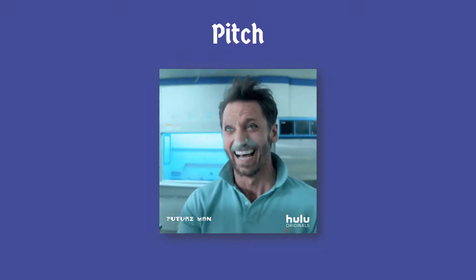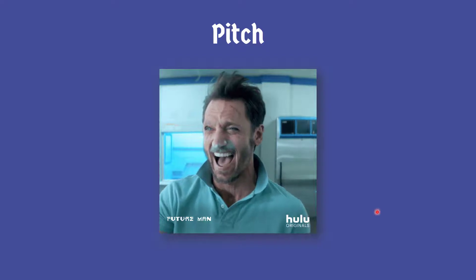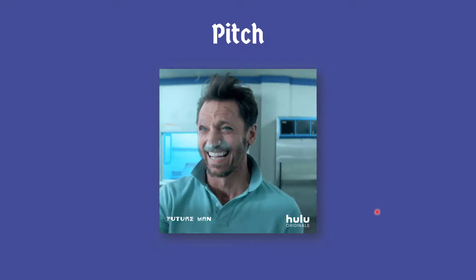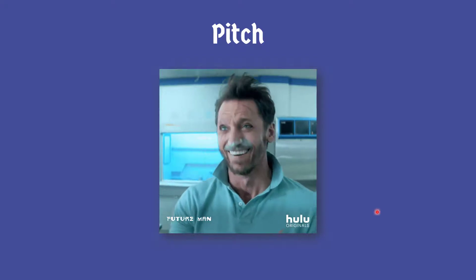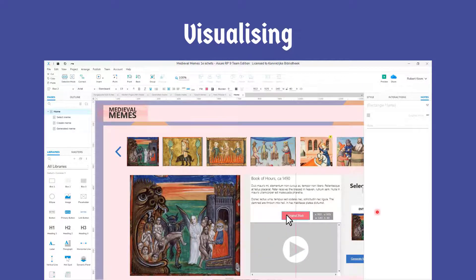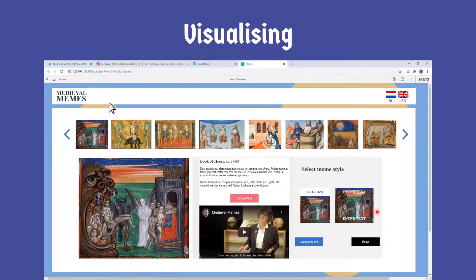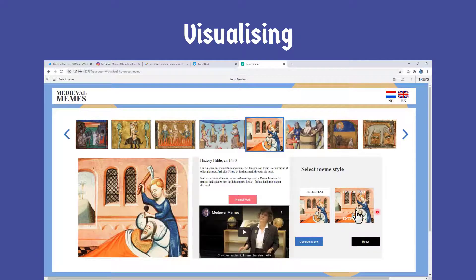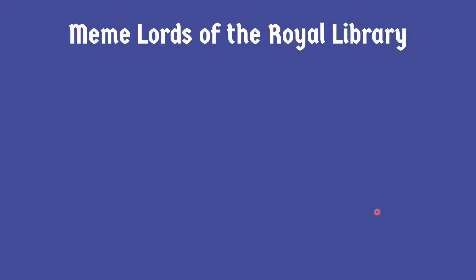We tried to pitch our idea to our colleagues, but most of them did not understand it. Libraries preserve, and most of them are not in touch with internet culture. So therefore we visualized it — we tried to show in an image what we wanted to do. We also created a team of rough librarians.